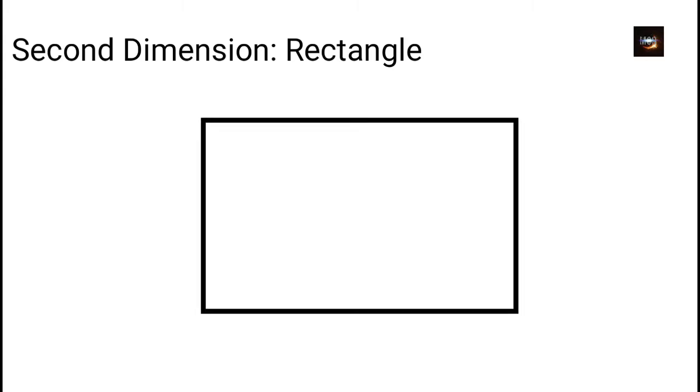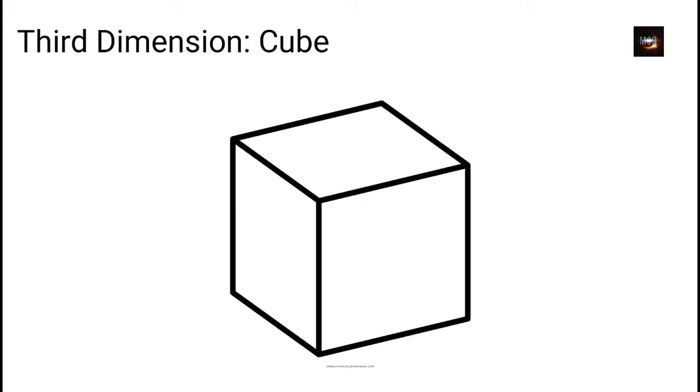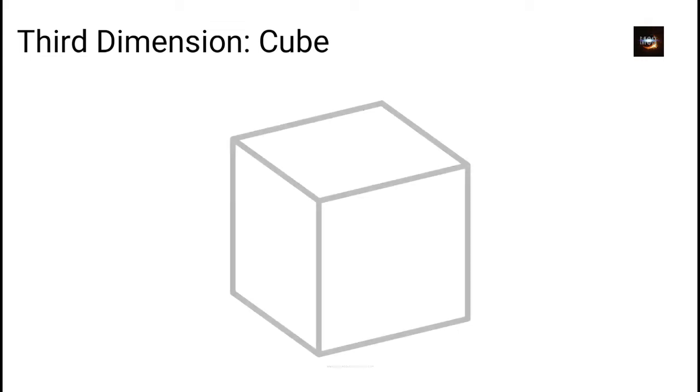Two lines in direction perpendicular to each other make up the second dimension, consisting of length and width. Now if we include depth in a 2D figure, it becomes the third dimension, which includes length, width and depth. We perceive our world in three dimensions.